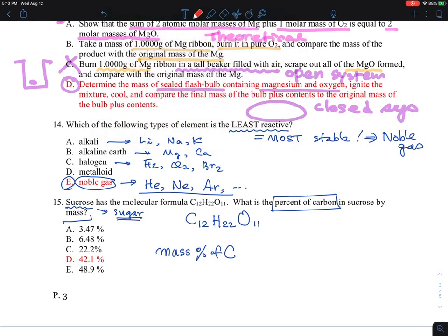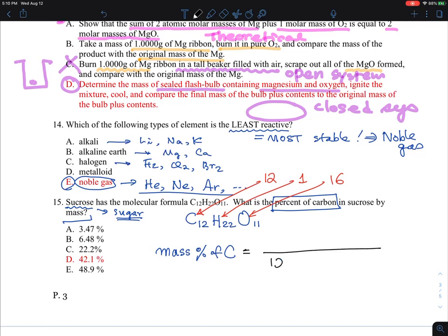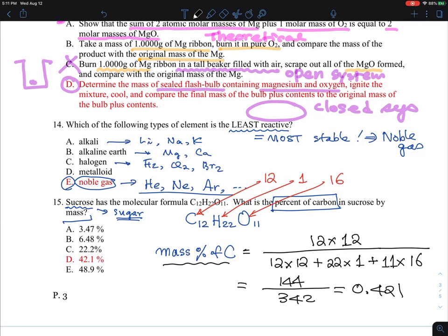You just have to remember that carbon has an atomic mass of 12, hydrogen has an atomic mass of 1, oxygen has an atomic mass of 16. From the sucrose, the total mass is 12 carbon times 12 mass, 22 hydrogen times 1 gram per mole mass, and 11 oxygen times 16 grams per mole mass. The percentage of carbon mass is 12 times 12. This sums up to 144 over 342, that is 0.421, so 42.1% mass of carbon. That's the answer, which is number 15.